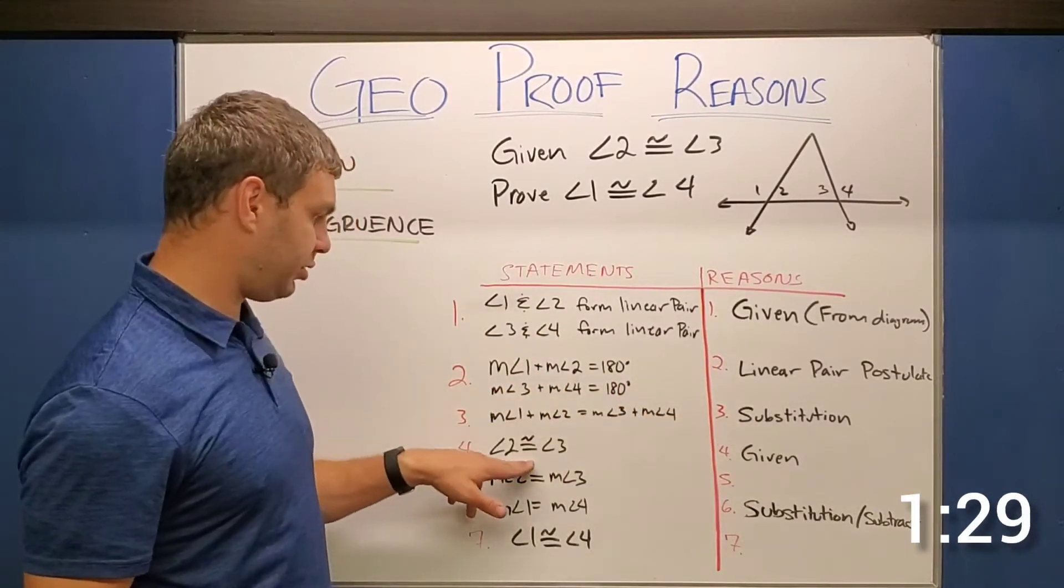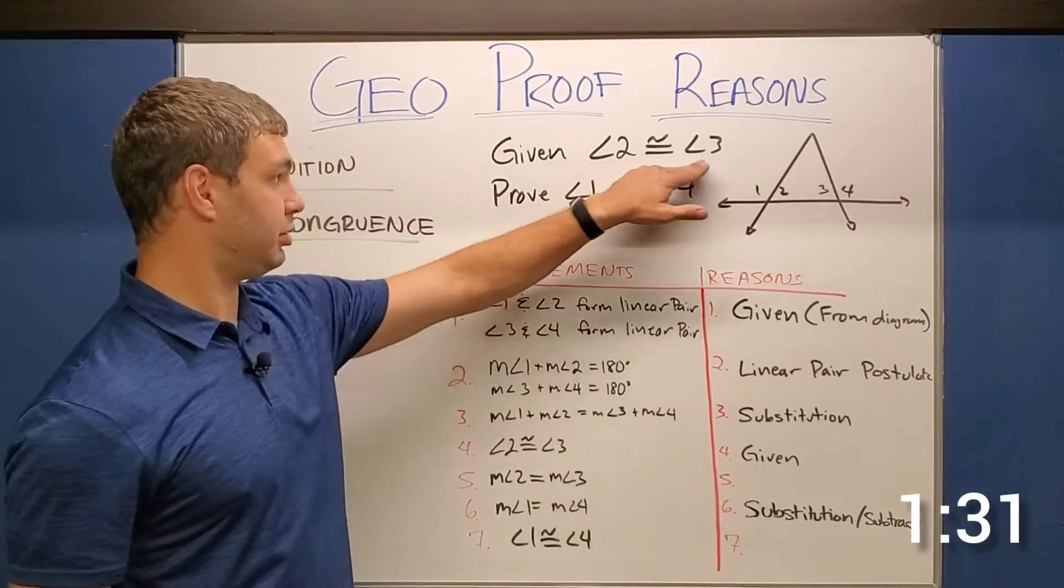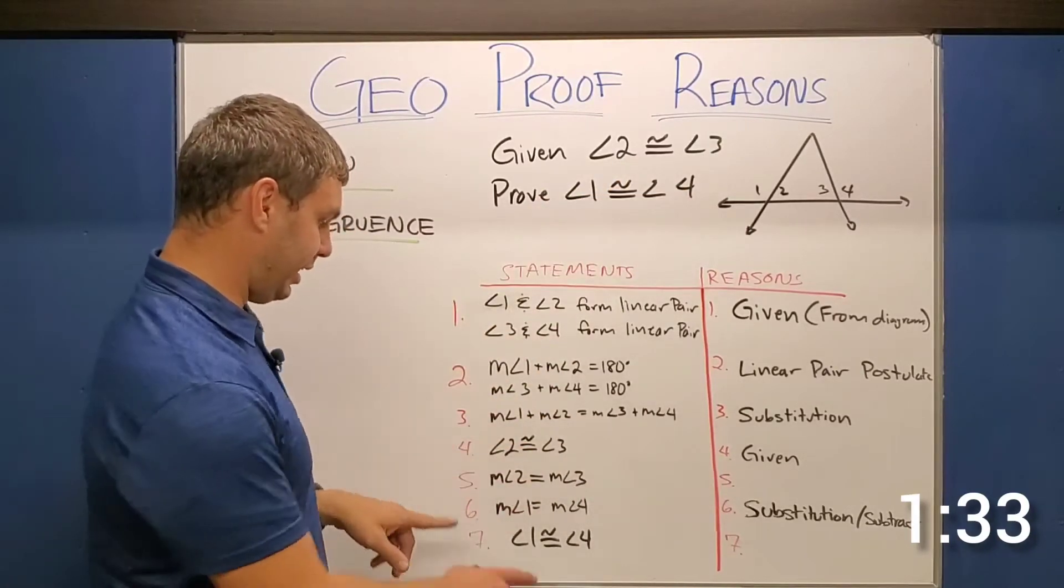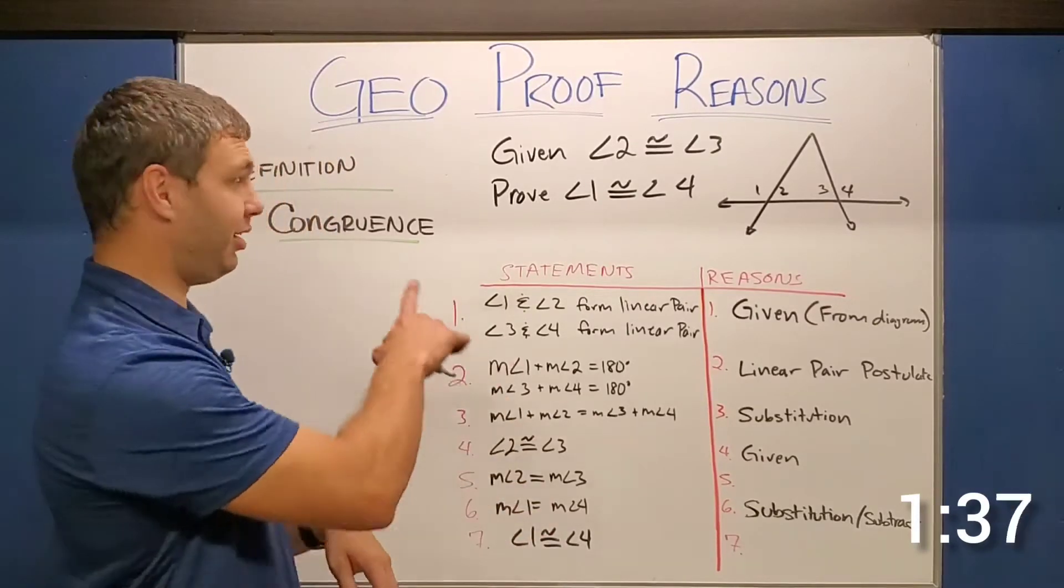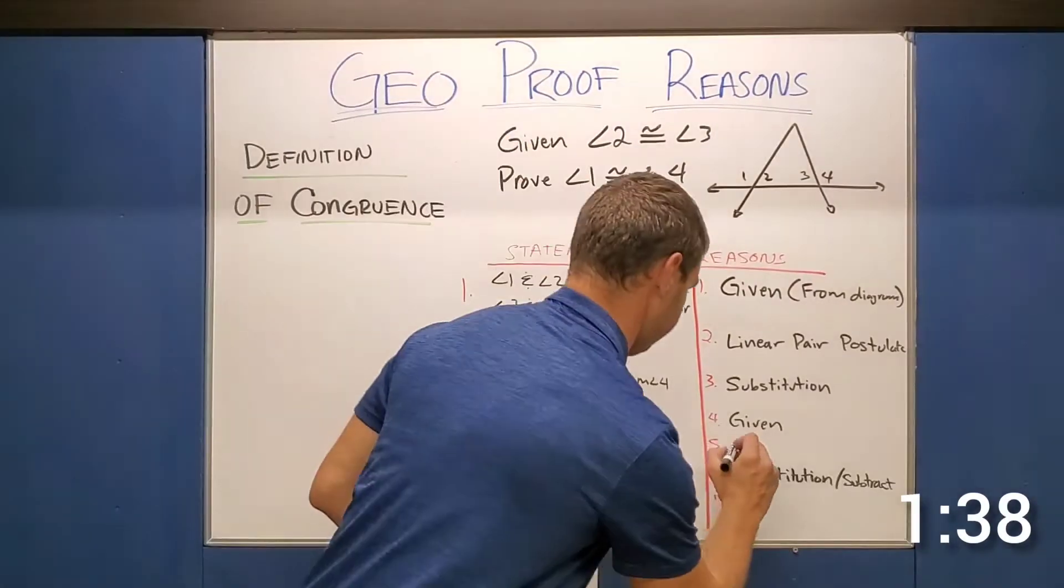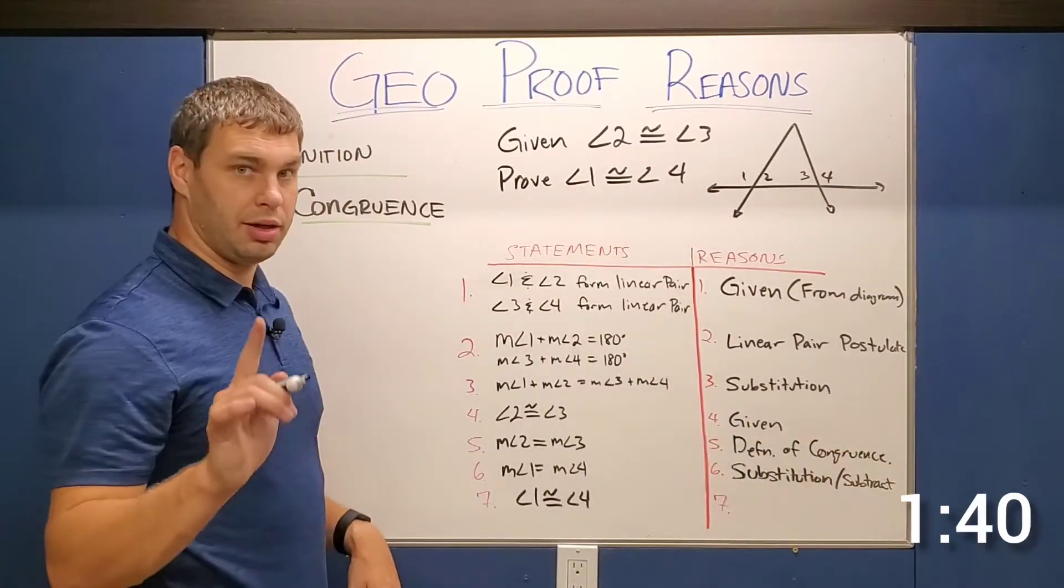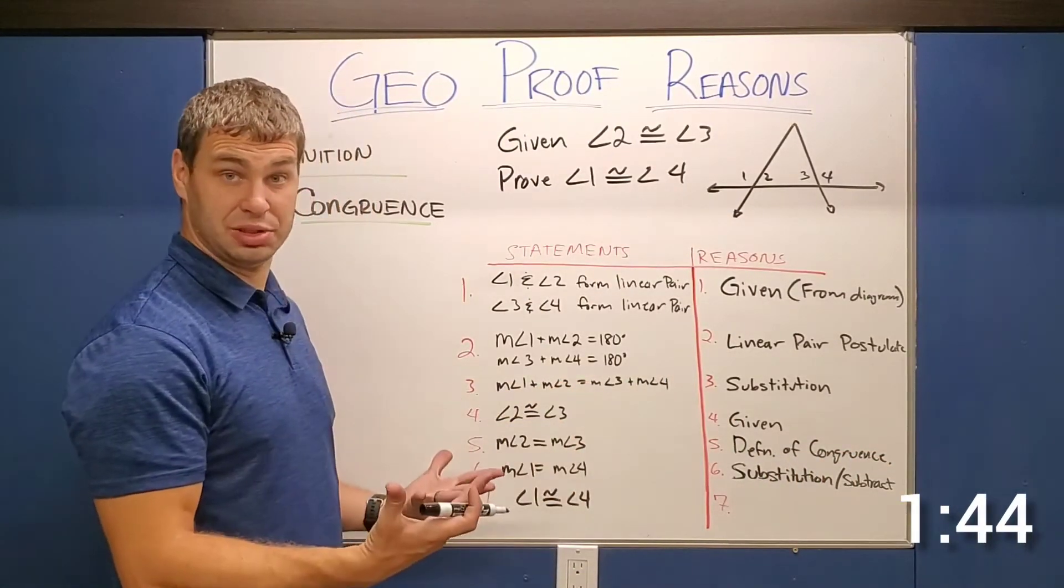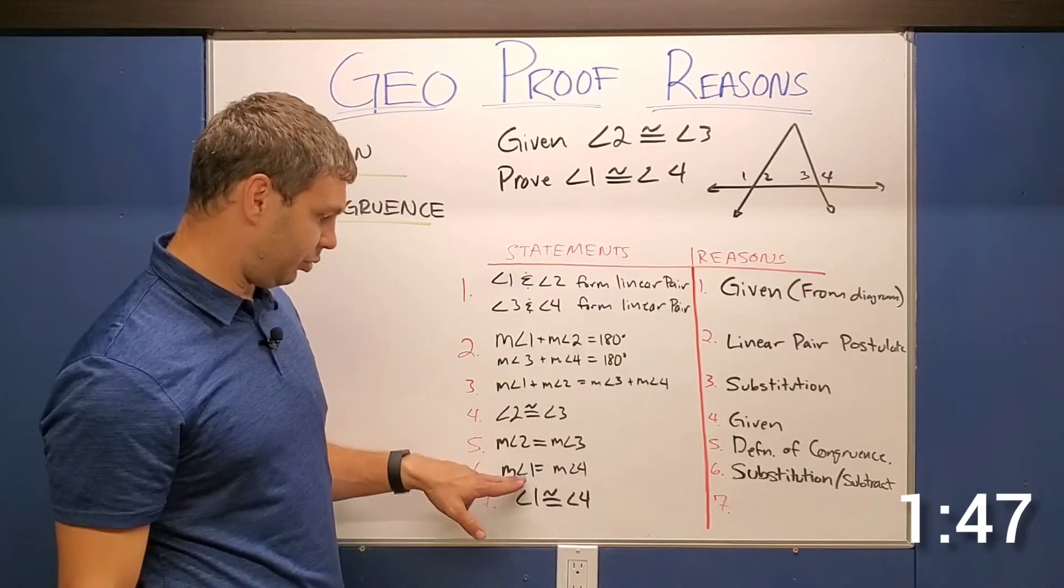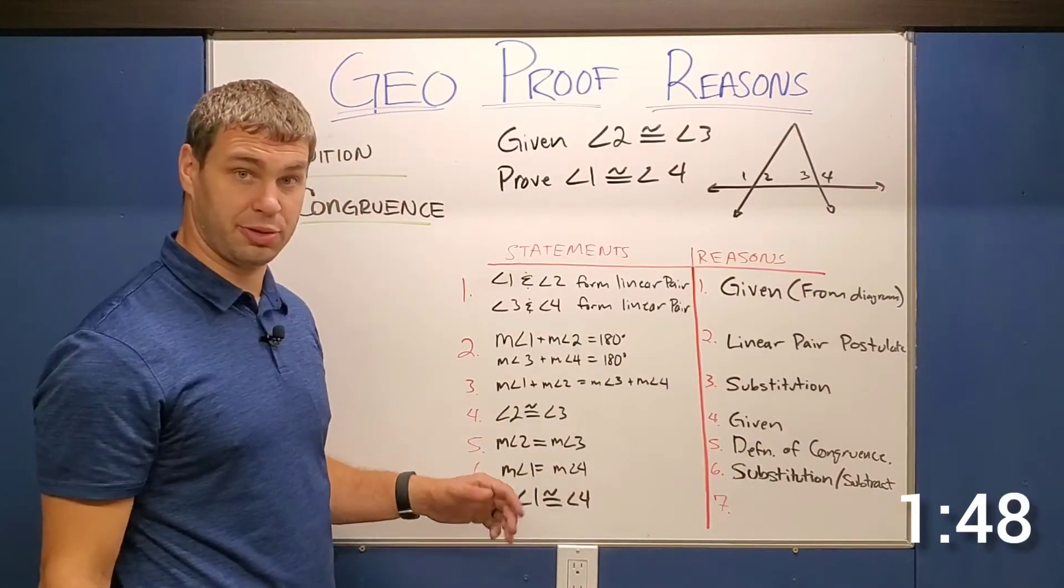And then here's where my actually given comes in, angle two is congruent to angle three. But then I noticed that my next line, instead of congruence, now I'm using equals. Again, that's going to be our definition of congruence. I was able to substitute these into my last equation and do some subtraction to get finally that the measure of angle one is equal to the measure of angle four.